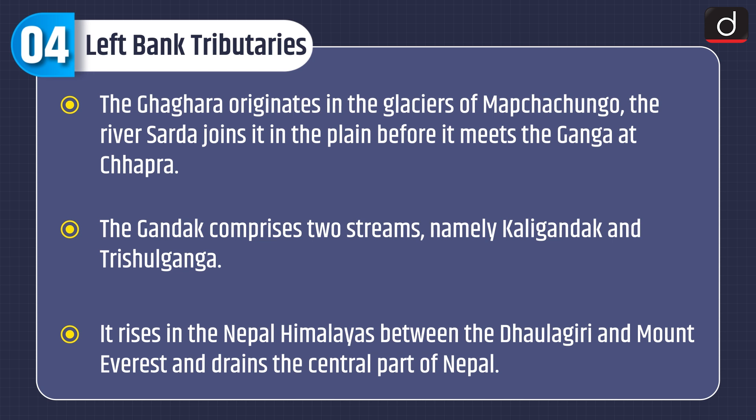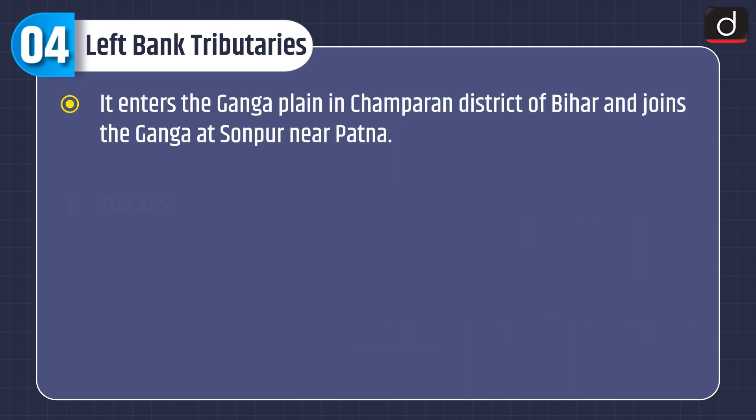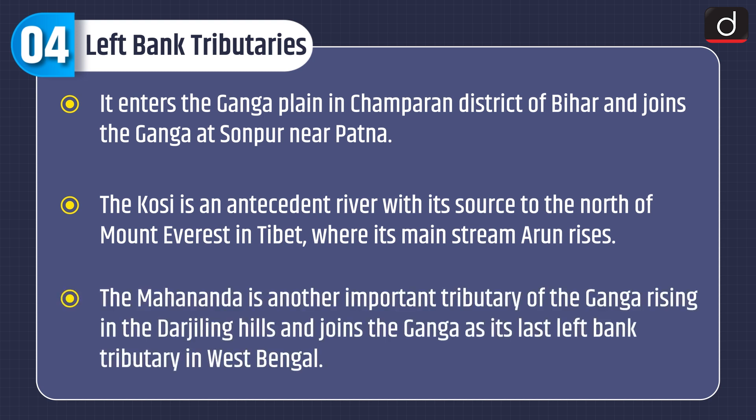The Gandak comprises two streams, namely Kali Gandak and Trishul Ganga. It rises in the Nepal Himalayas between Dhaulagiri and Mount Everest and drains the central part of Nepal. It enters the Ganga plain in Champaran district of Bihar and joins the Ganga at Sonpur near Patna. The Kosi is an antecedent river with its source to the north of Mount Everest in Tibet, where its mainstream, the Arun, rises. The Mahananda is another important tributary rising in the Darjeeling hills and joins the Ganga as its last left bank tributary in West Bengal.